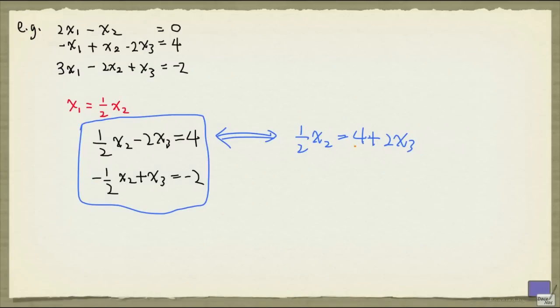So I have a minus half x2, so I can replace it with minus 4 plus 2 x3. Right? Because half x2 is 4 plus 2 x3, so minus half x2 is this. And then plus x3, equal to minus 2.